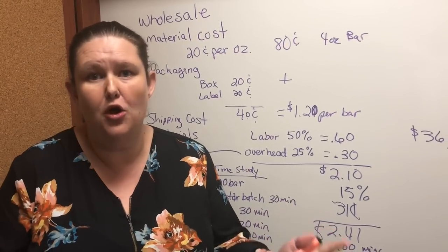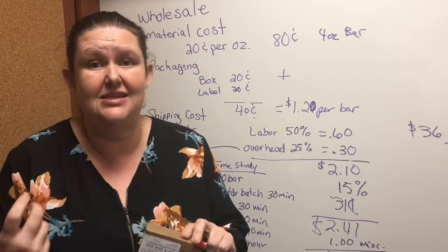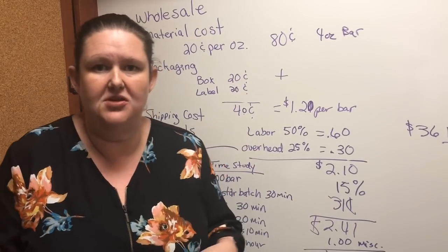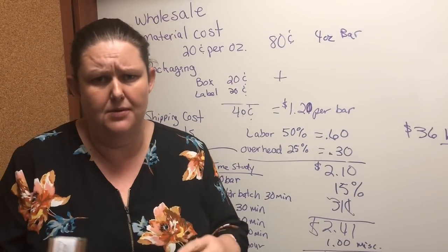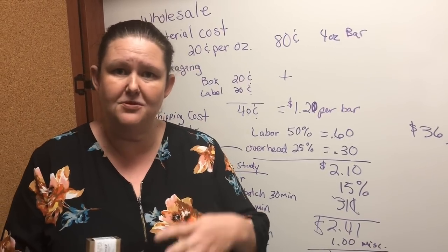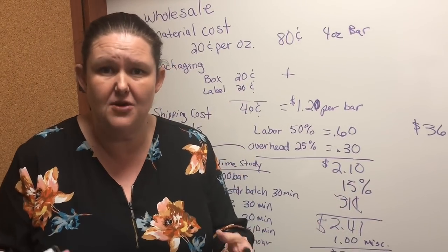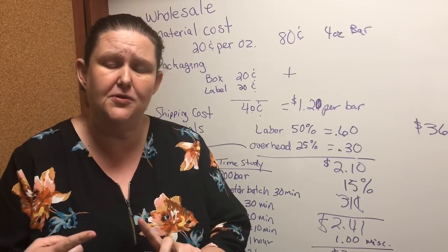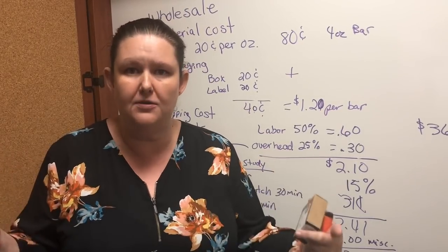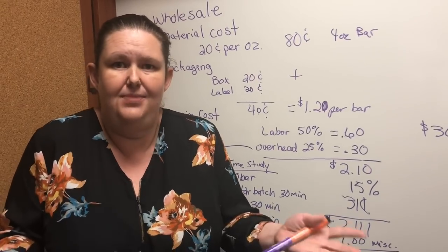When you wholesale, you're giving retailers 50 to 60 percent off the retail price, so you have to make that worth their effort. That means you need to set your minimum order quantities. How many bars do you want them to purchase in order to get that huge 50% or 60% discount? You also need to think about your order minimum — what's the minimum dollar amount they must purchase to even be considered as a wholesale buyer?